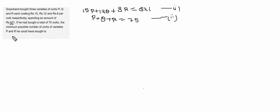The minimum possible number of corks of varieties P and R he could have bought. That means we want to minimize the value of P plus R, which means we have to maximize the value of Q.